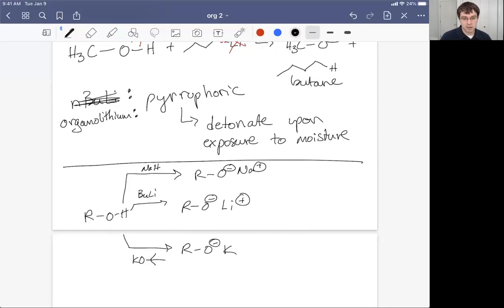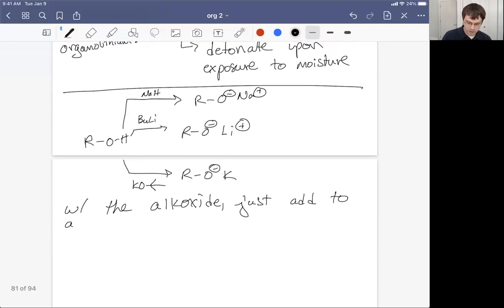We really haven't done a Williamson ether synthesis yet, but I keep trying to harp on the fact that this is just an SN2 reaction. So the hardest part or the newest part may be just generating the alkoxide. But once you're there, you can just add to a haloalkane.